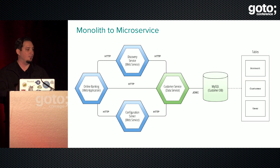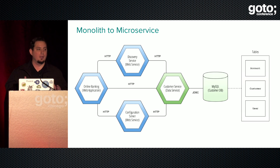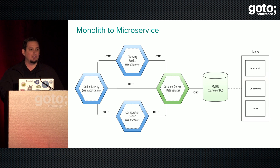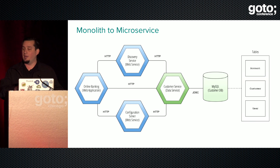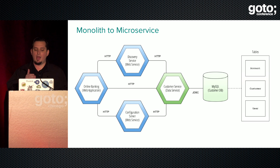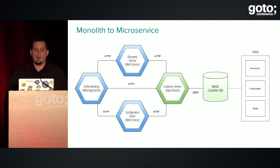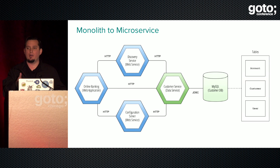Going to microservices isn't just about building new apps — companies with 10-year-old software ask how to move from a monolith to microservices. One method is splitting the monolith: go into the monolithic application and extract modules one by one, refactor them into separate applications, and communicate back over HTTP. In this example, I have a customer service that used to have a front end inside it. The first step is to rip out that front end, create it as the online banking application, and communicate over HTTP back to the customer service. A discovery service and configuration service help as you add more microservices.